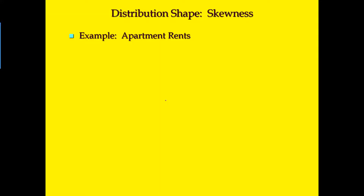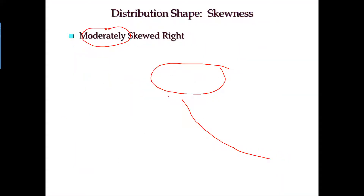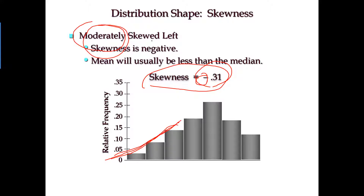Going back two slides — remember when we looked at the skewed left, we called it moderately skewed left. When will this distribution become highly skewed left? If it's highly skewed left, the skewness has to be smaller than negative one. So if the skewness is smaller than negative one, you will have a highly skewed left distribution.